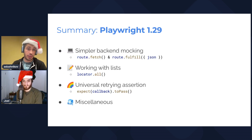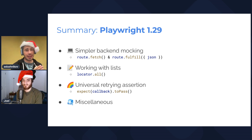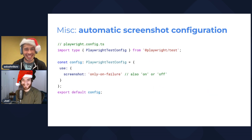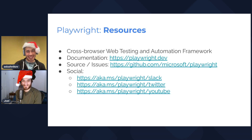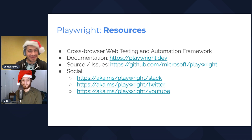And that's it for Playwright 1.29. It has simpler backend mocking using route.fetch and route.fulfill with JSON. There's a new API locator.all to get locators for all elements in a list. There's a new universal retrying assertion, expect callback to pass. And there are miscellaneous new features: new arguments for Android device, improved select option behavior, jsconfig support, and new screenshot configuration options. If you like what we do, sign up on Twitter, check out our YouTube, read more at playwright.dev, and give us a star on GitHub. Happy holidays, everybody!